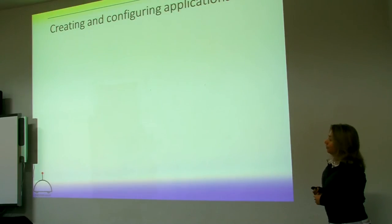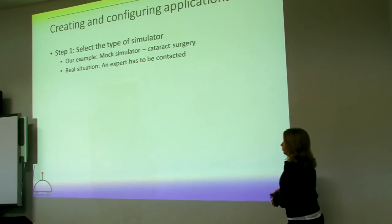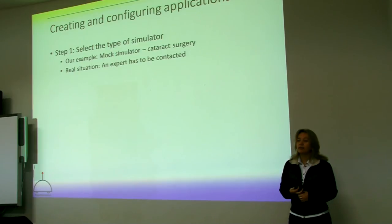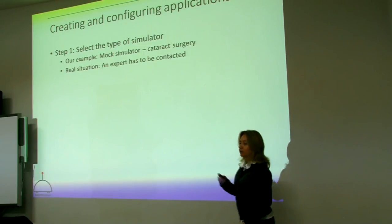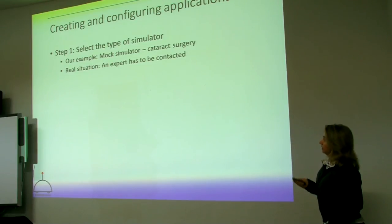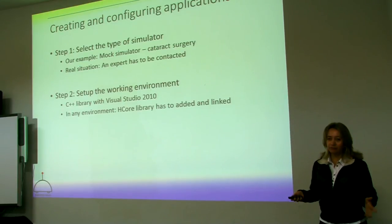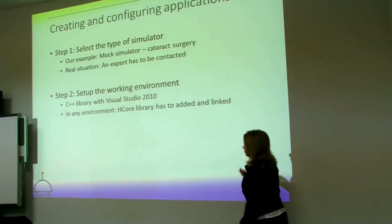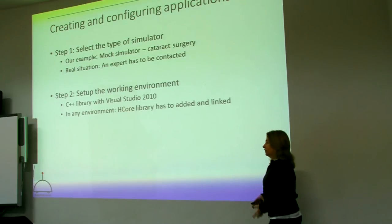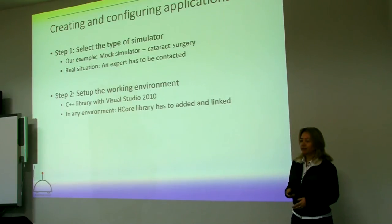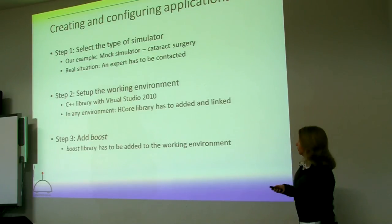The outcome of all this is that for creating and configuring a new application — in this case, for our example we have done a mock simulator for cataract surgery — there are just 10 steps. The first step is selecting the type of simulator, what you are going to simulate. The second step is setting up the working environment — in our case a C++ library developed with Visual Studio 2010. The core library has to be added to your new project. What we gained here is that compiling time is reduced by about 90% using the original library. You also have to add Boost because it is also used.